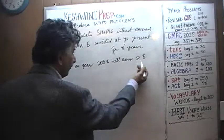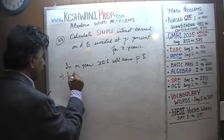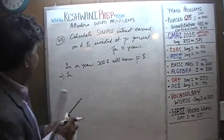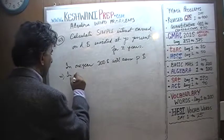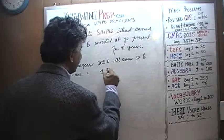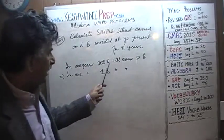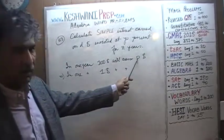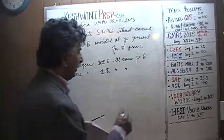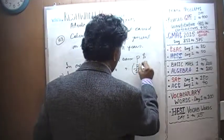If one hundred dollars earns P dollars, that in turn implies that in one year, a dollar should earn — how much should the dollar earn? Well, if one hundred dollars is earning P dollars, one dollar should earn one-hundredth of that: P over 100. P over 100 dollars.